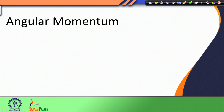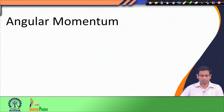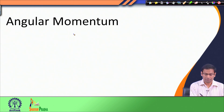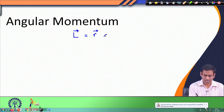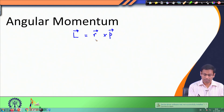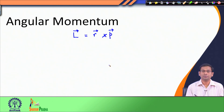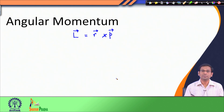Before we discuss the quantum mechanical description of the angular momentum operator, we will briefly see how we define angular momentum in classical mechanics and how we can write down its quantum mechanical operator form. We know that angular momentum is given by the vector product between the displacement and the linear momentum. The vector product between these two vectors r and p gives us angular momentum, and we use angular momentum to describe a system when a particular system is going in a circular path making an angular motion.